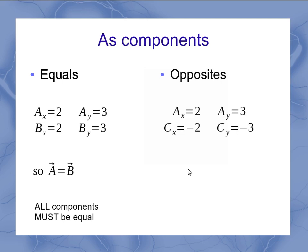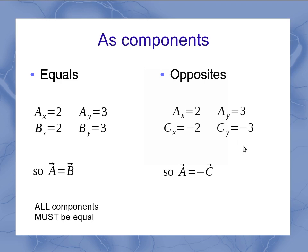If I've got opposite vectors, they've got the same numbers but opposite signs. Where a has a positive sign, c has a negative sign, and the same thing on the y components. So we can say that a is the minus of c, or it's the opposite of c. You could think of this as multiplying a negative sign by the components of c to get exactly the same result as a. So again, all components have to be opposite — the same number but with the opposite sign.